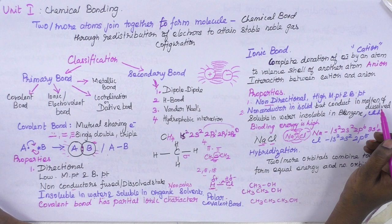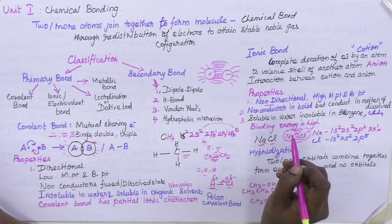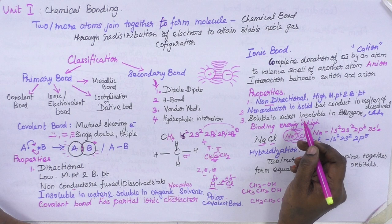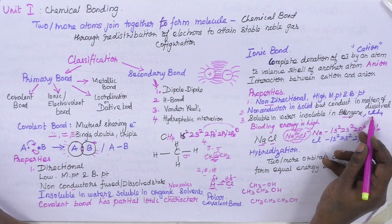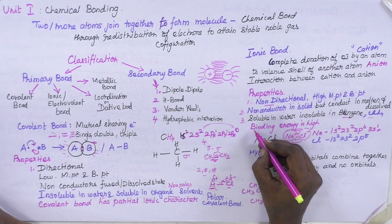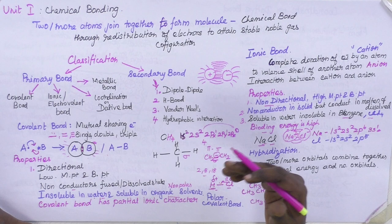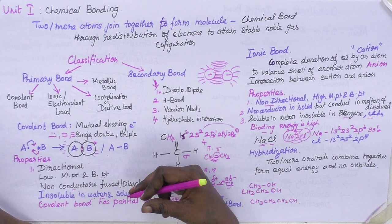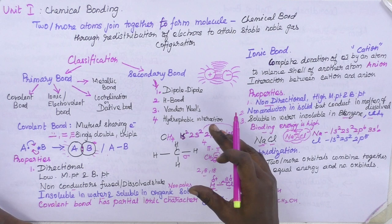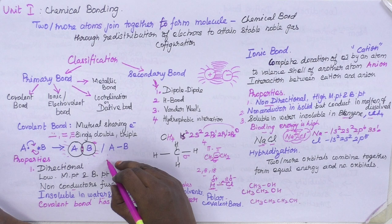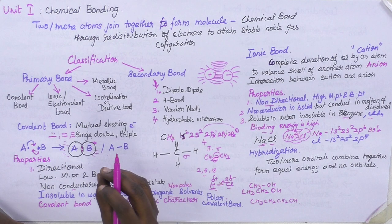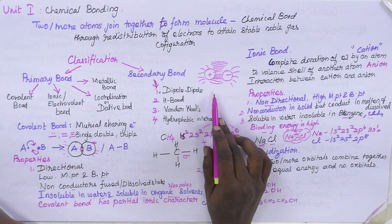The third property is solubility. Ionic molecules are soluble in water, which is a polar solvent, and insoluble in non-polar solvents like benzene and CCl₄. The binding energy of ionic compounds is very high. Because of the non-directional nature of the ionic bond, we need a large energy to break the molecule. But for covalent molecules, only minimum energy is needed — that is why they have low melting point, low boiling point, and poor binding energy. Everything is based on how the bond is present between the two atoms.